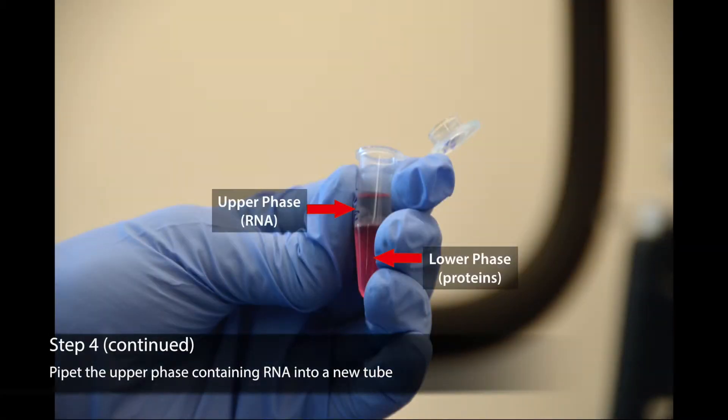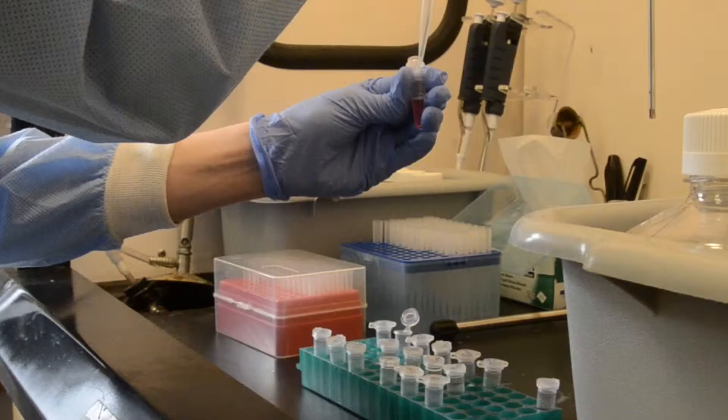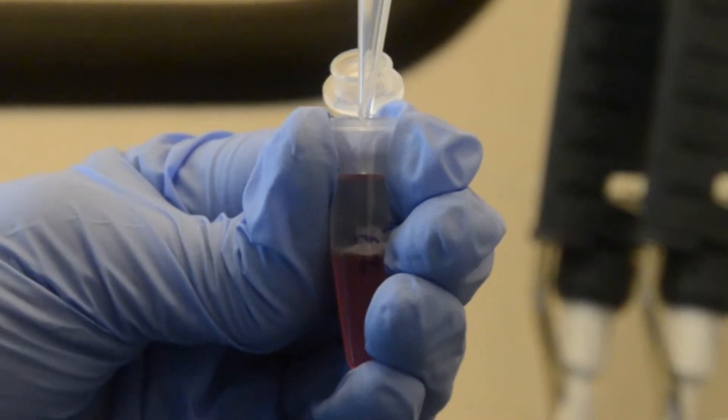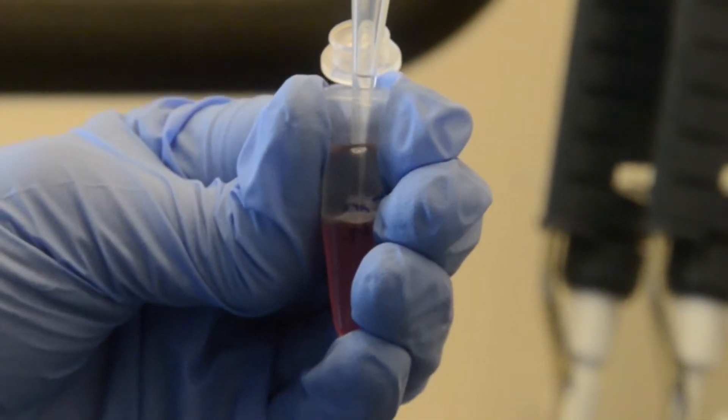After centrifuging, pipette the upper phase into a new tube. Record the exact amount pipetted. The amount you pipette will equal one volume. Avoid puncturing the hazy middle layer and touching any of the phenol layer, both of which will result in an unsuccessful extraction.